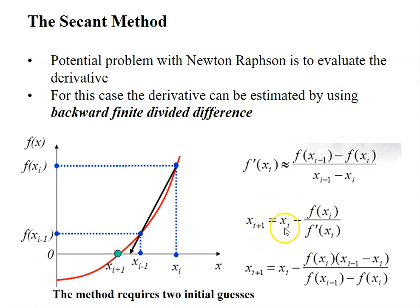xi plus 1 equals to xi. So this is the Newton-Raphson formula. But when you use backward finite divided difference, we can actually represent the derivative equation with this formula here. f prime xi, which is the function of the derivation of the function equals to f xi minus 1 minus f xi divided by xi minus 1 minus xi.